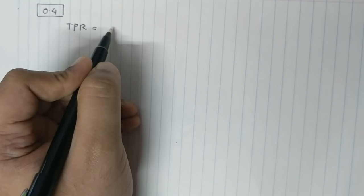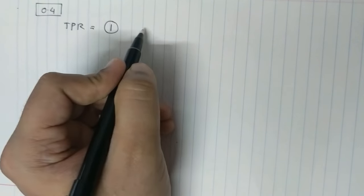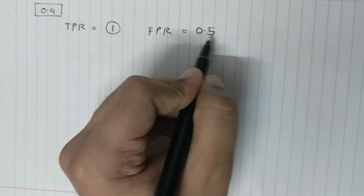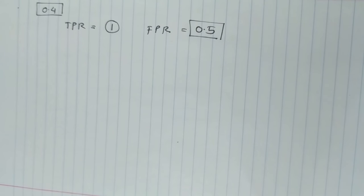Next up, I'll calculate the threshold at 0.4. So at 0.4, now the true positive rate, if you keep calculating, the true positive rate would be 1 and false positive rate would be 0.5. The same calculation goes again.